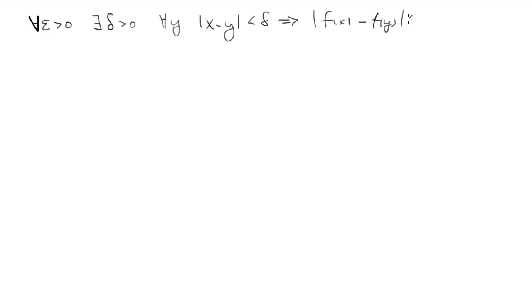So, we're going to have done the definition. Let epsilon be given. Choose a delta. Got to fill that blank in. Y be given with |X - Y| less than delta.